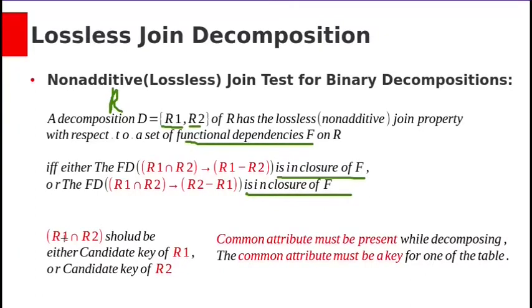Simply we can say that R1 intersection R2 should be either candidate key of R1 or candidate key of R2. Or even more simply, common attribute must be present while decomposing, and the common attribute must be a key for one of the tables.